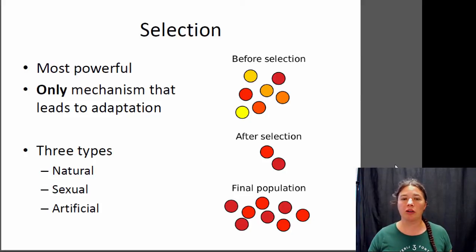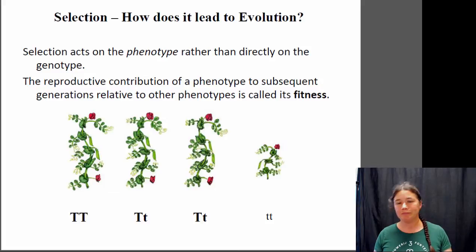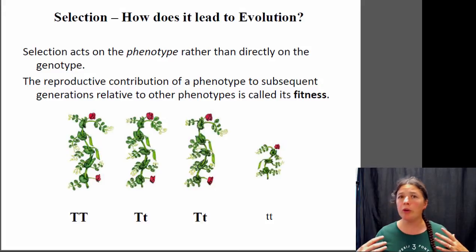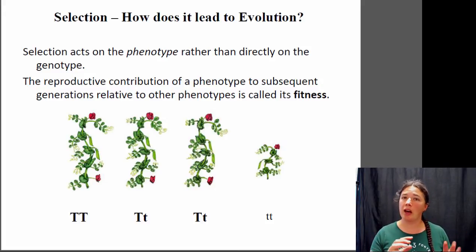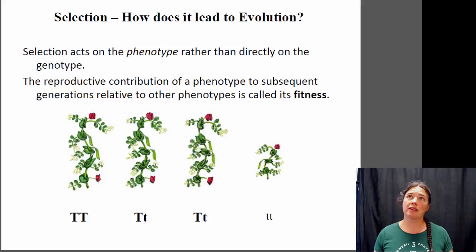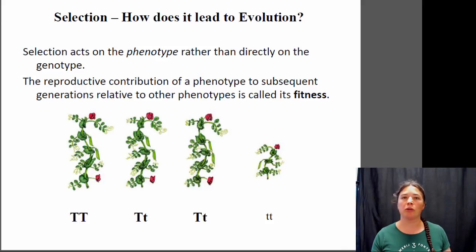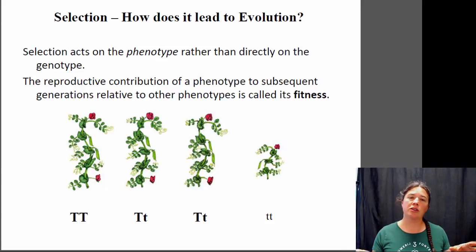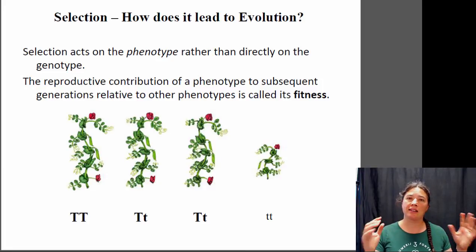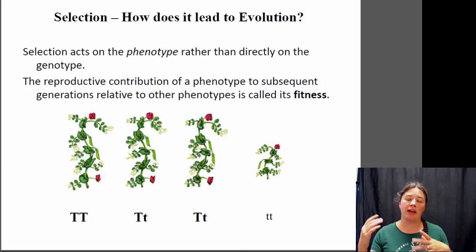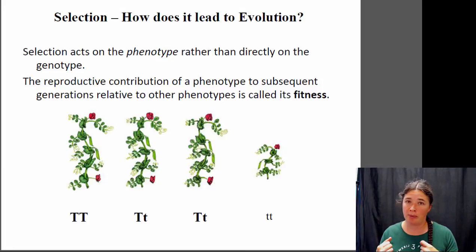Let's take a look at how this actually affects the population. Selection always acts on the phenotype, not on the genotype of the individual. So if you have a trait with a dominant-recessive relationship where the heterozygote looks exactly the same as the homozygote, the selective pressure is going to act on the phenotype — it will act exactly the same on a heterozygote as it will on a homozygous dominant.